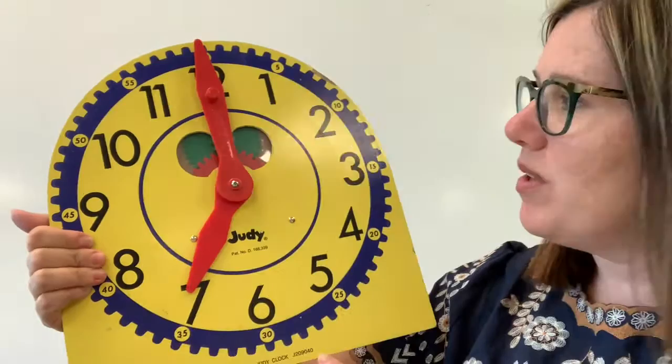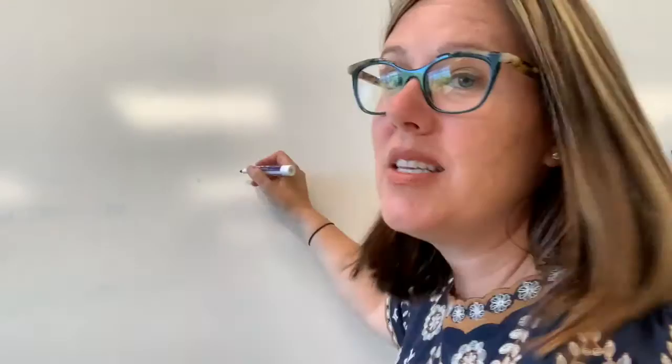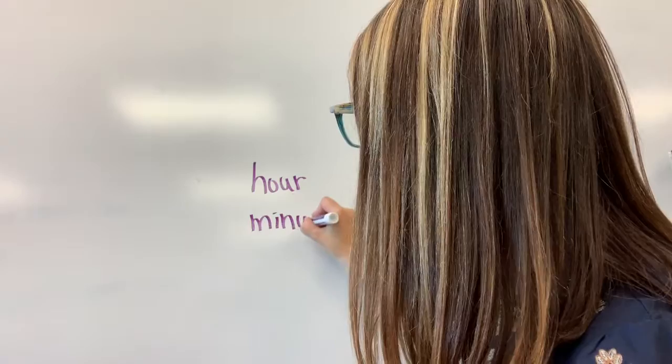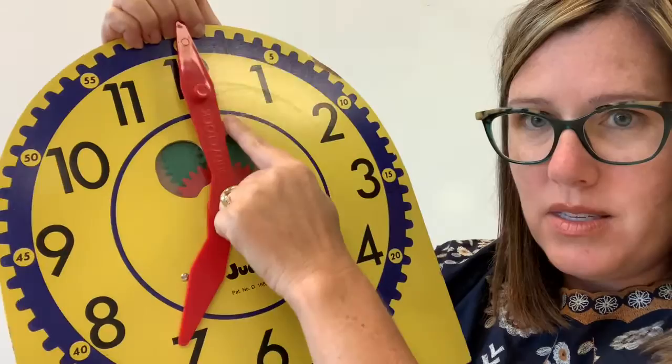Well if I look at this clock, this is my hour hand and this is my minute hand and I have a trick to help you remember. Your hour hand is the shortest hand. I'm going to write these two words here. The hour hand is the shortest hand just like the word hour is shorter than the word minute. So this is our hour hand, this is our minute hand.